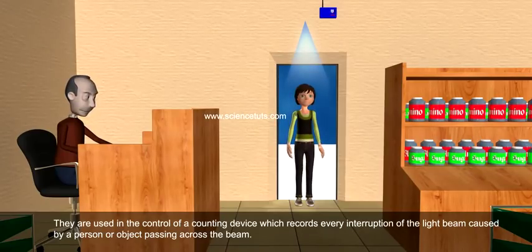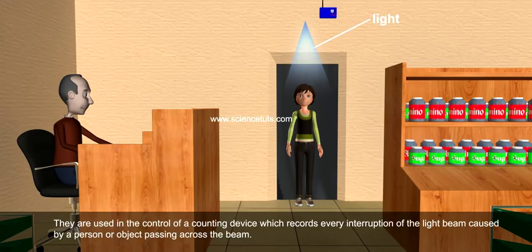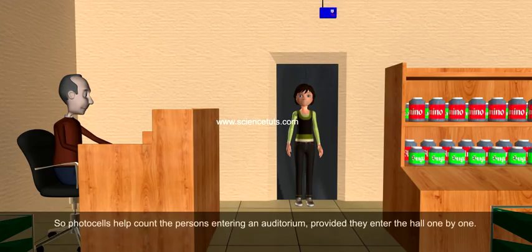They are used in the control of counting devices which record every interruption of the light beam caused by a person or object passing across the beam. Photocells help count the persons entering an auditorium, provided they enter the hall one by one.